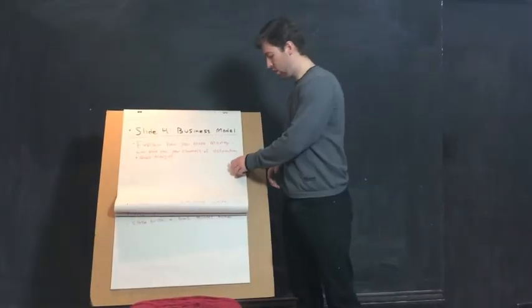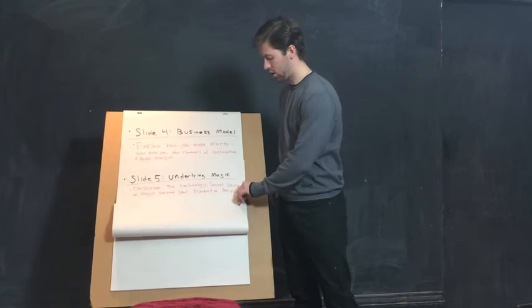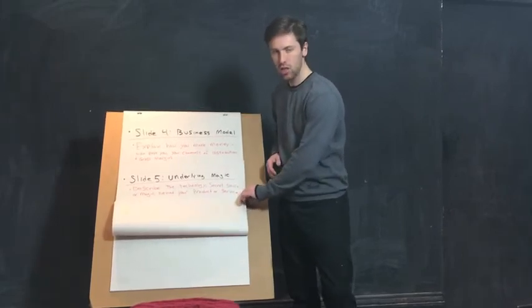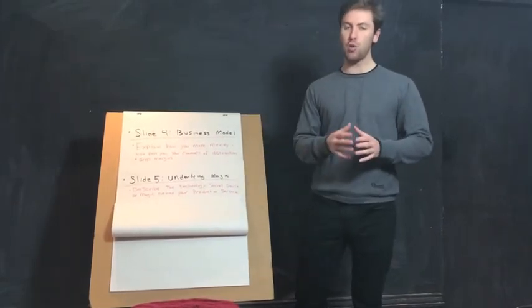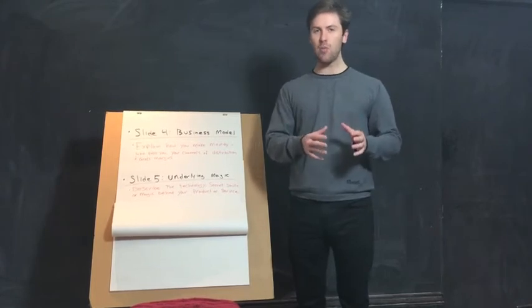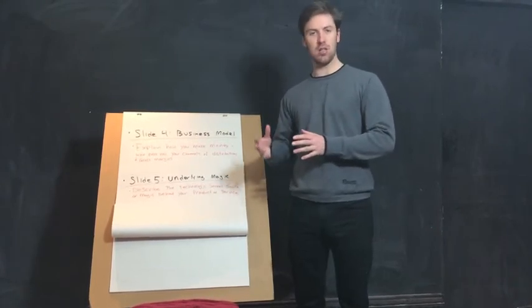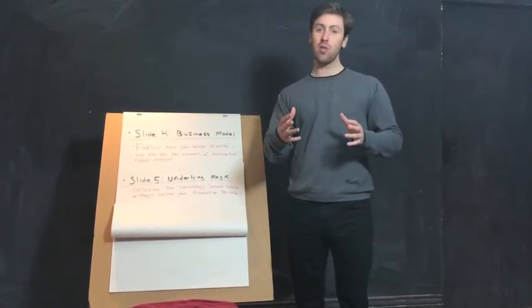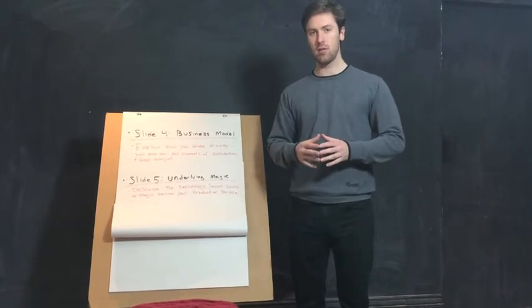Five is your underlying magic. Describe the technology, secret sauce, or magic behind your product or service. Aim for less text and more diagrams on this slide. An objective proof of concept can be very helpful here.